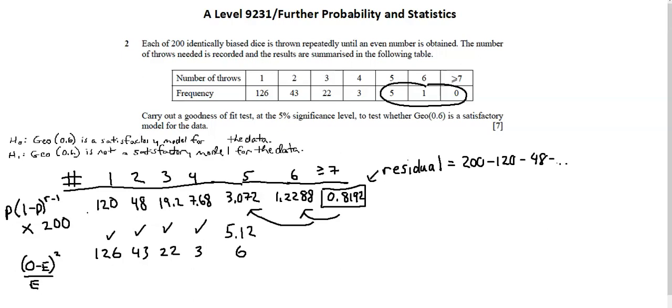So let me be clear on my labeling. The calculations that I did with the geometric expression, those are my expected values. And the calculations I've brought down from the given table, those are the observed values.